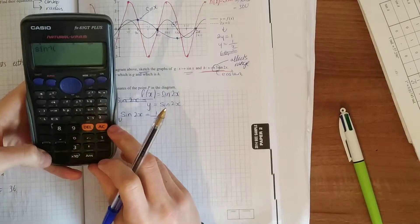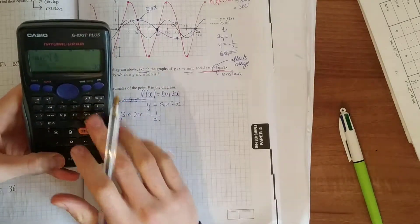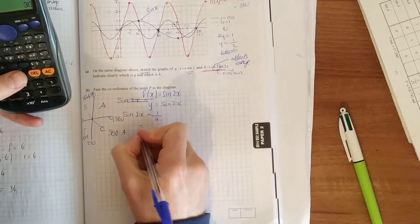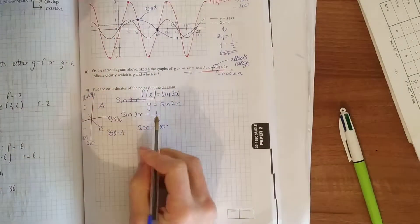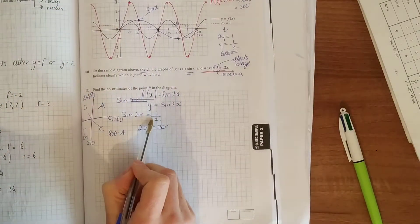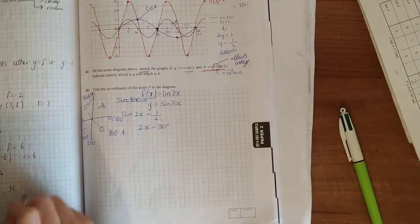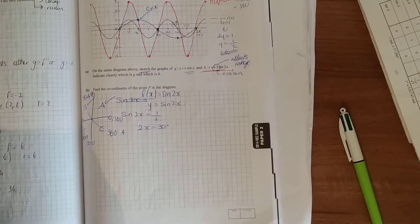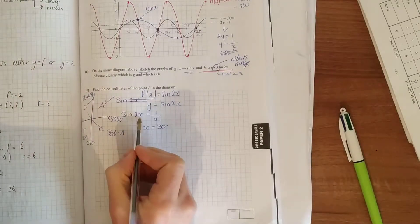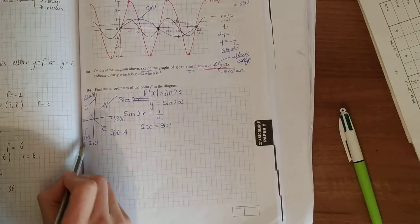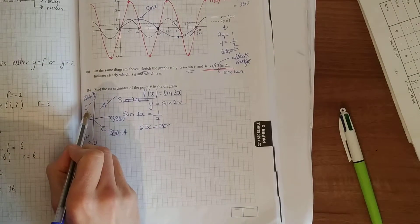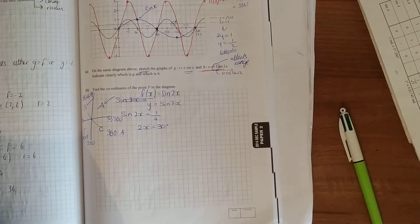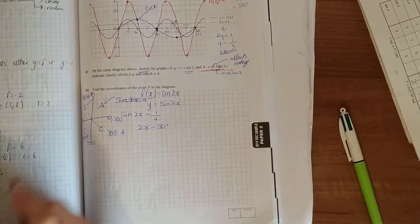Shift sine and put in your half, and you get 30 degrees. So 2x equals 30 degrees. There's two places this is happy: in your S region and also in your all region. So 2x equals 30 degrees, and 2x is also equal to 180 minus 30, which is 150 degrees.